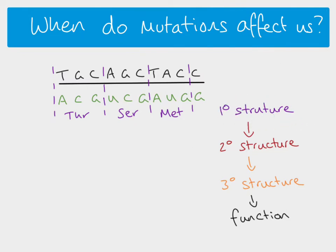Any change in function is ultimately going to be a result of a change to the primary structure, because of changes to the DNA. For example, if we had a mutation where a thymine base replaced this cytosine base, that would result in a change in our RNA — we've now got a different RNA codon — which in this instance gives a different amino acid. We've now got a different primary structure, which is probably going to lead to a change in the tertiary structure and then a change in function.